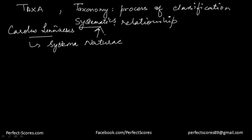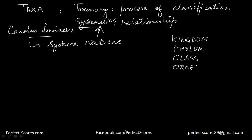Lots of categories are there, and those categories can be divided according to a hierarchy — a taxonomic hierarchy. At the top we have a kingdom, then we have a phylum, after that a class, then order, then family — for example, the cat family — then genus, and then species.